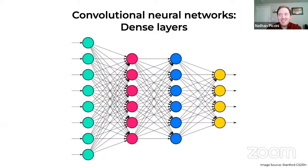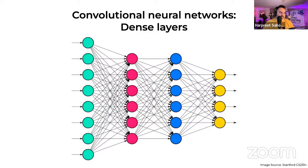Question: are weights and feature map values different? Yes — the weights are what you're multiplying the input by to get the feature map. So they are different things. After you take an image and multiply it by some weights, that result is a feature map.